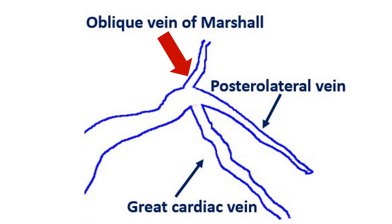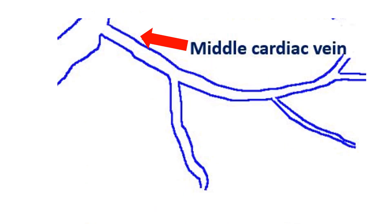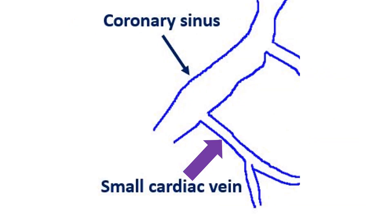The oblique vein of Marshal is the residua of the embryonic left superior cardinal vein. The middle cardiac vein also originates at the apex but drains the posterior side of the heart. It is situated in the posterior interventricular sulcus and empties into the coronary sinus, running along the posterior descending coronary artery in the reverse direction. The small cardiac vein is in the posterior part of the right atrioventricular sulcus and also drains into the coronary sinus.